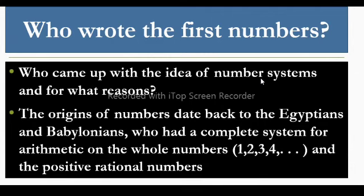The origins of numbers date back to the Egyptians and Babylonians, who had a complete system for arithmetic on the whole numbers (1, 2, 3, and so on) and the positive rational numbers.